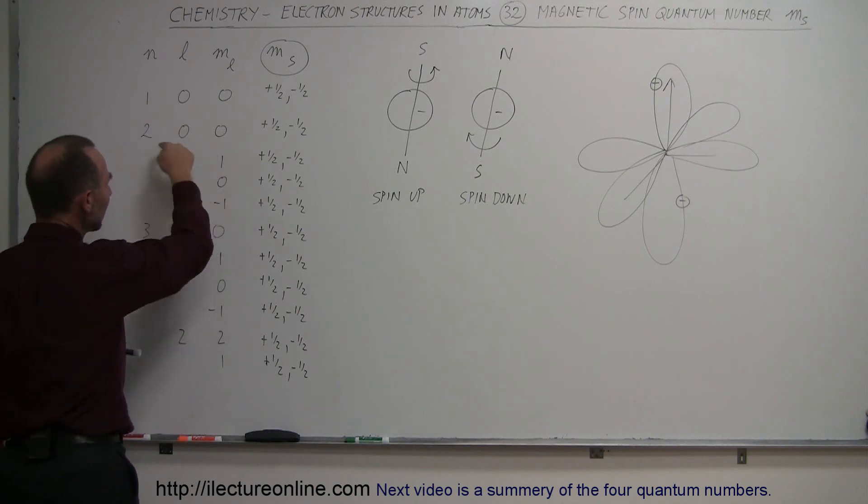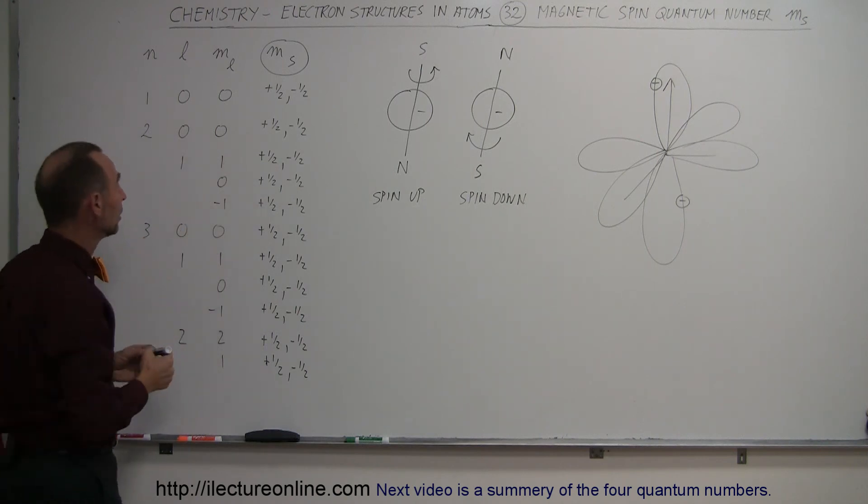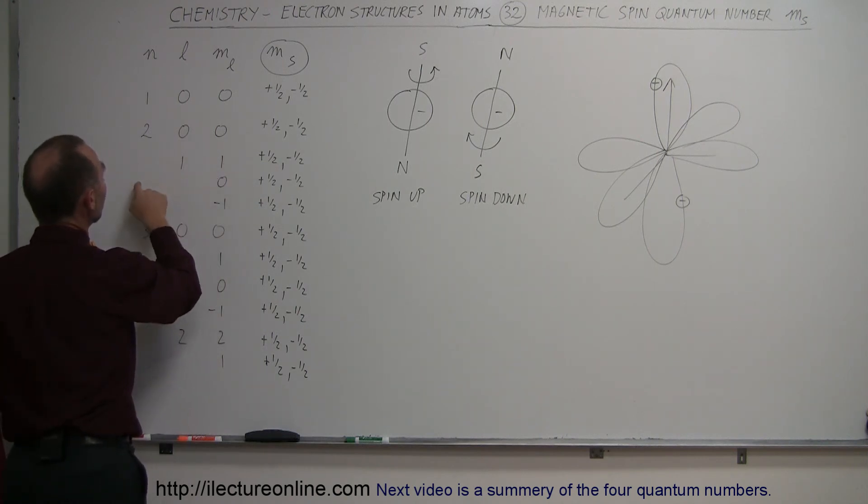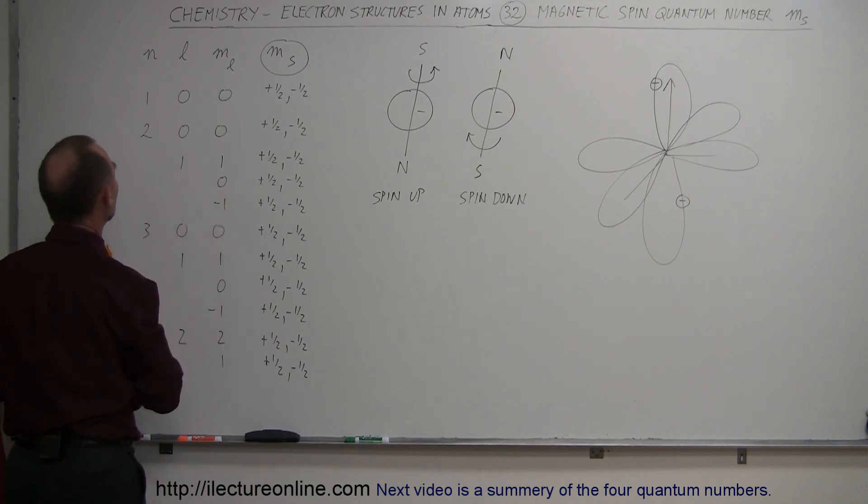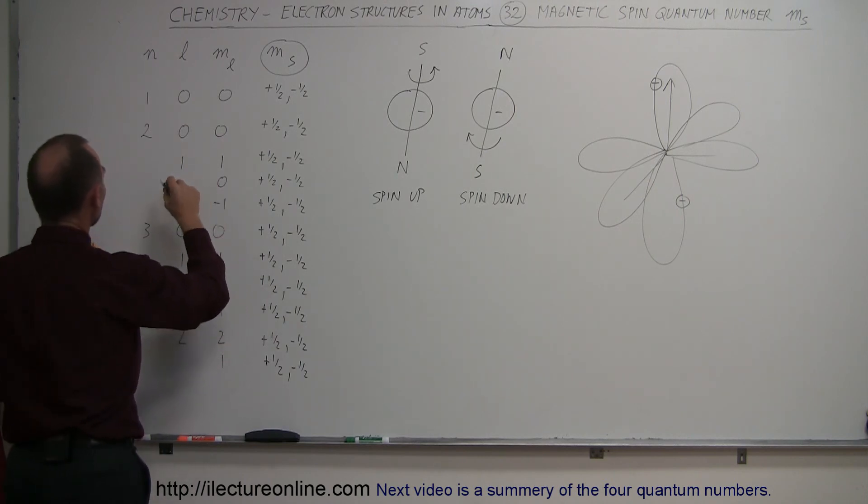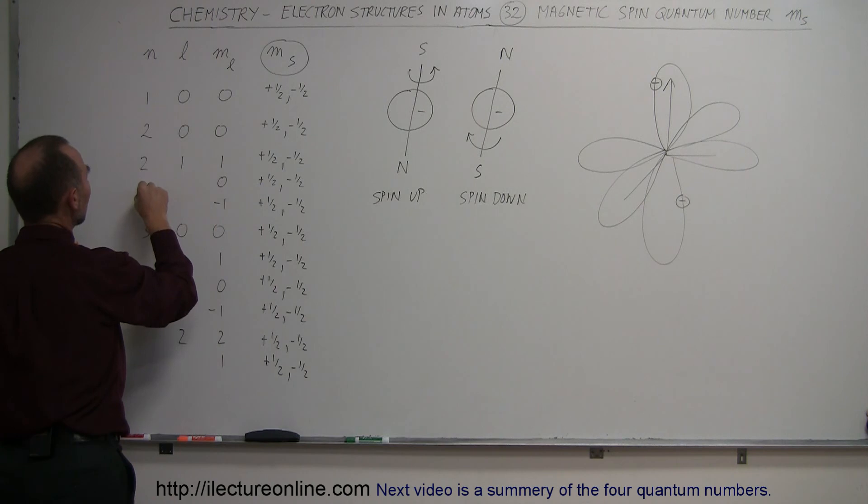Each of these combinations represents a single orbital. So this would be 2, 1, 1; 2, 1, 0; 2, 1, negative 1. And if you like, I can put in the rest of the numbers. So that would be 2, 2, 1, 1. Oh, I put it too high there.